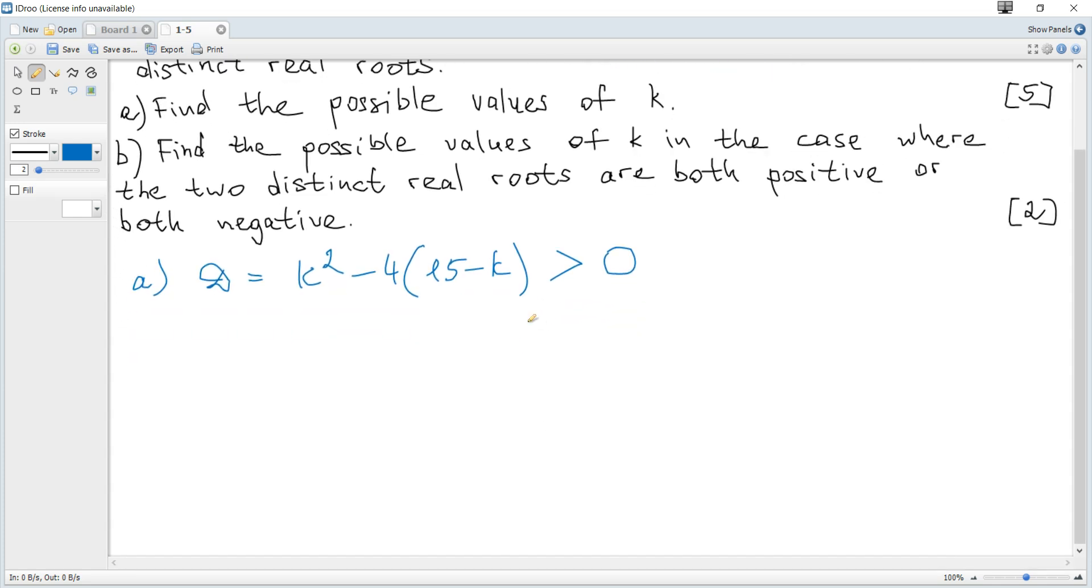This must be strictly greater than zero. A quadratic inequality arises here. Expanding and simplifying, it becomes k² + 4k - 60 > 0.